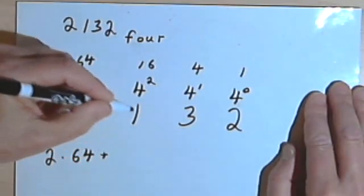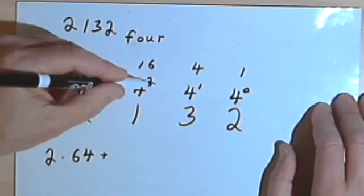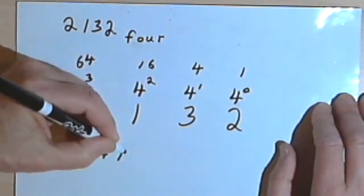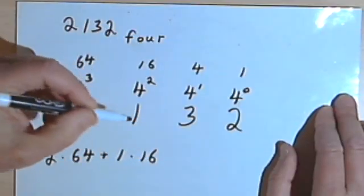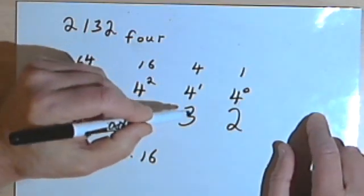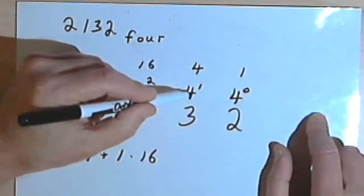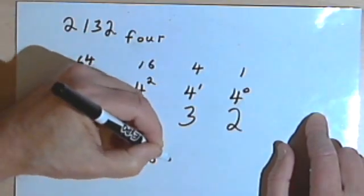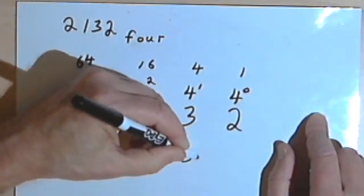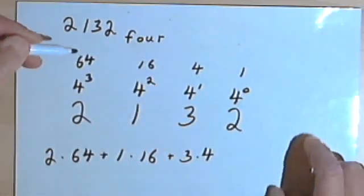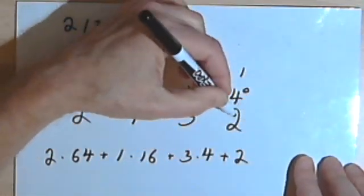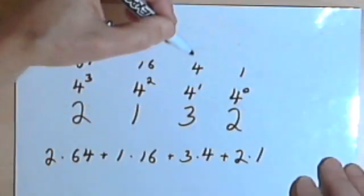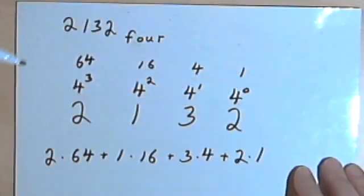And I've got a 1 in the next column, in the 4 squared column. So that's going to be 1 times 4 squared, or 1 times 16. In the next column, I've got a 3 in the 4 to the first column. So that's going to be 3 times 4. And in the last column, I've got a 2, and that'll be 2 times 1, because that's 4 to the zero column.